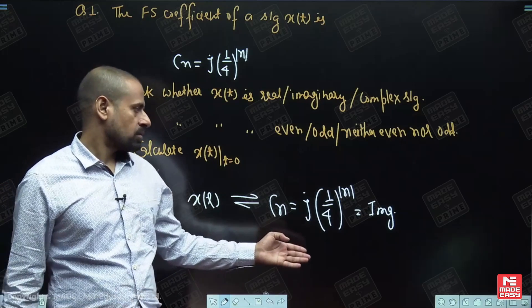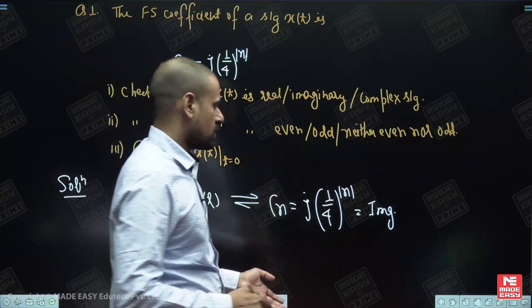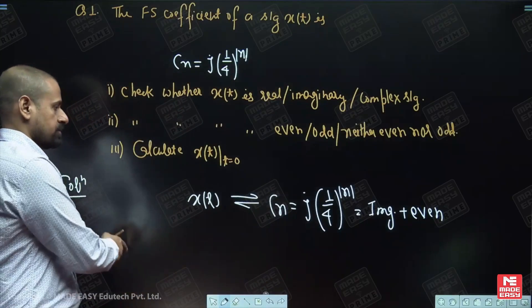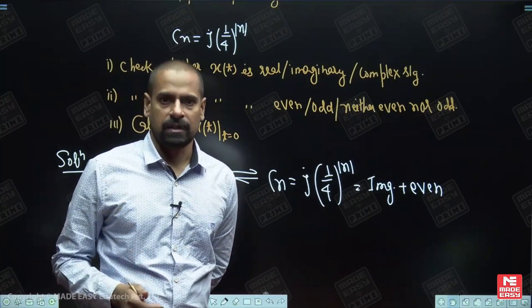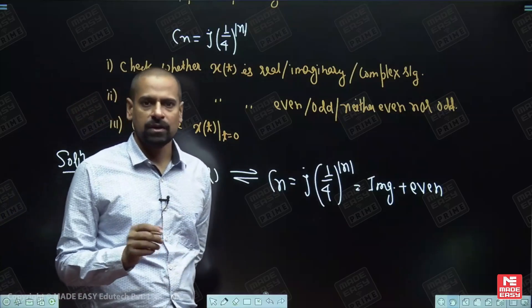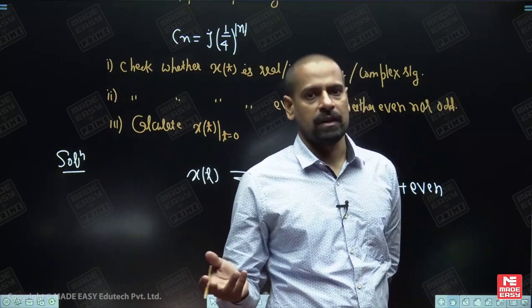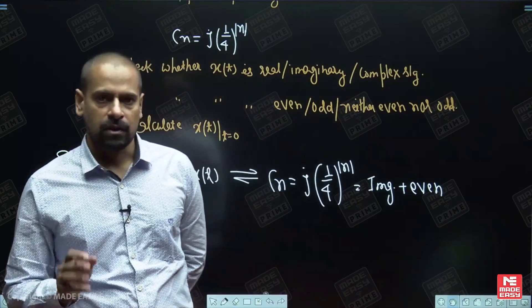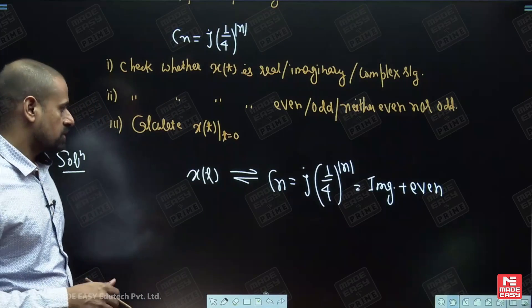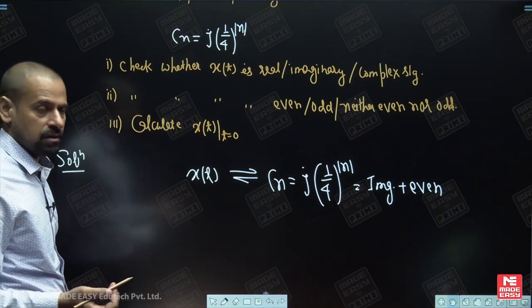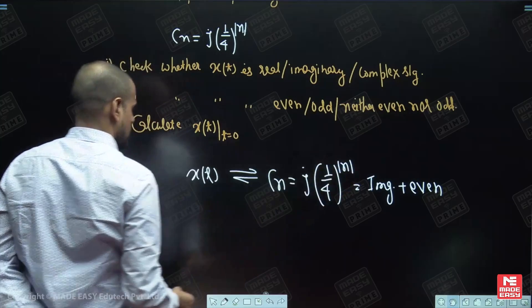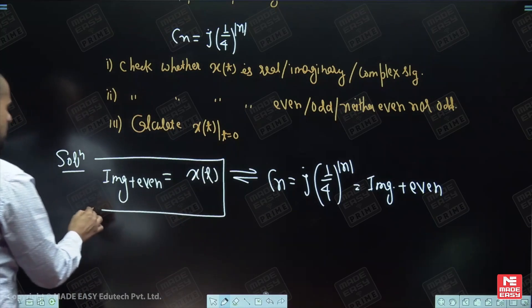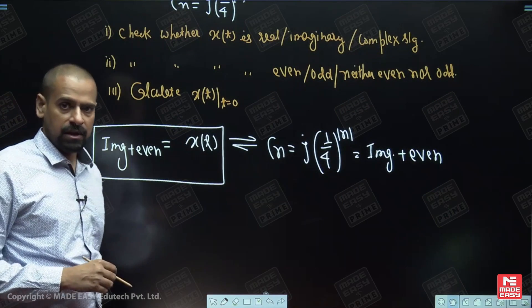C(n) is even also, because mod(−n) will be equal to mod(n). So it is not only imaginary but even also. The nature of C(n) is imaginary and even. We have seen in the Fourier series chapter that there are several pairs in Fourier series and Fourier transform that are very important — for a real even signal, the coefficient will be real even; for an imaginary even signal, the coefficient will be imaginary even; for a real odd signal, the coefficient will be imaginary odd. So if the coefficient is imaginary even, then X(t) will also be imaginary even.